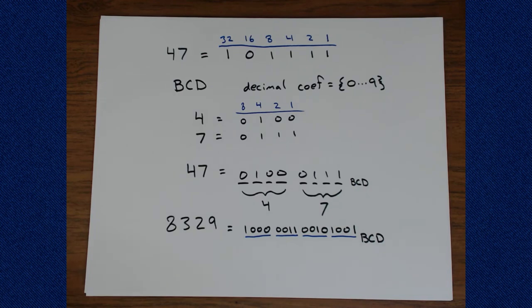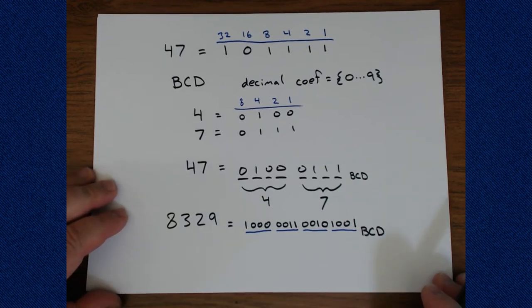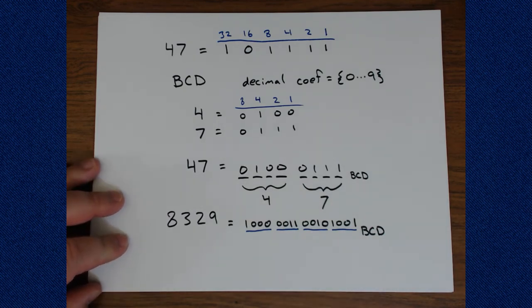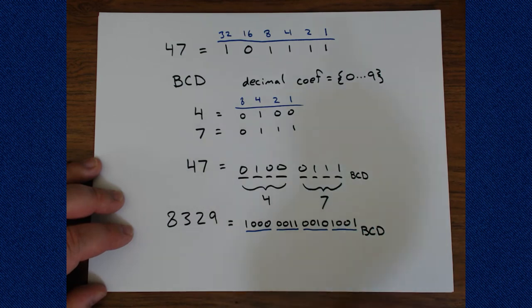Now, to go the other direction, I'm just going to write down some pattern of bits and then we'll see what the decimal equivalent of that is. And you'll see that the conversion from binary coded decimal is really very fast. So let's do like this one, 16 bits.